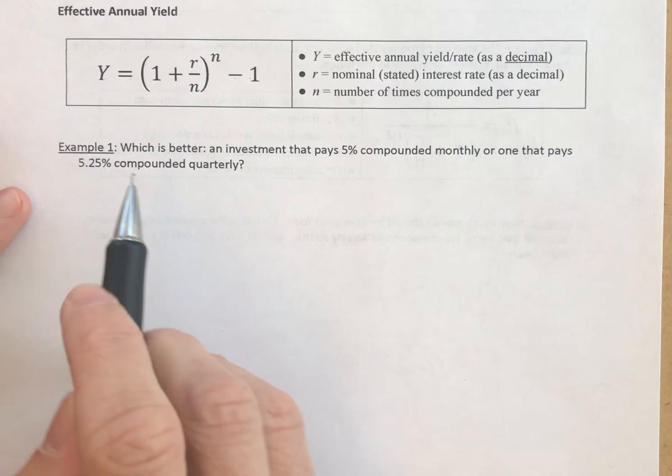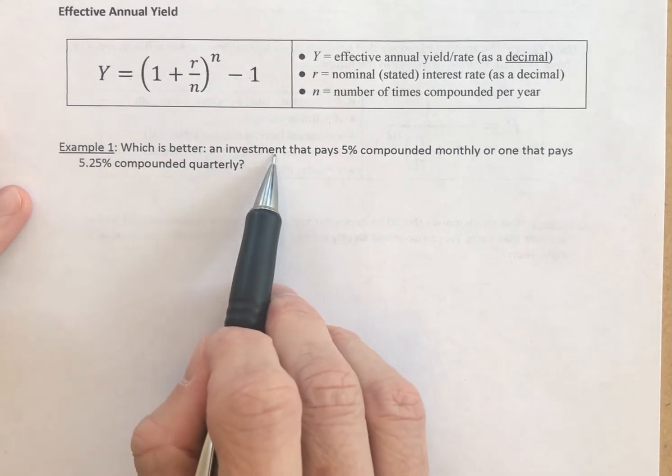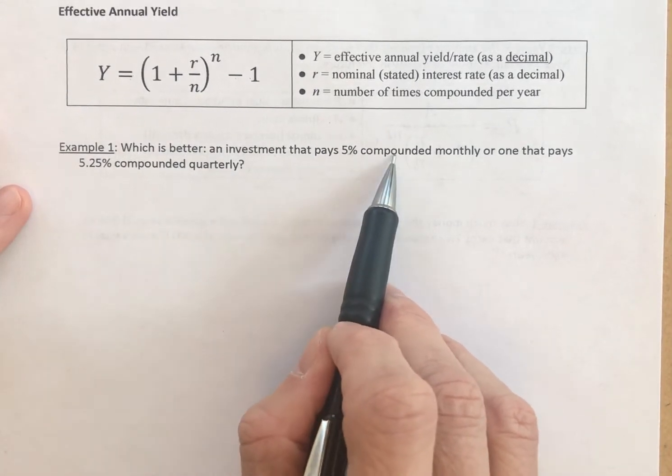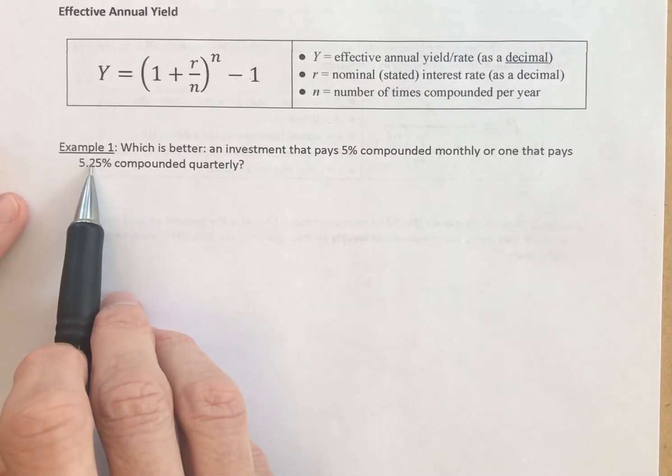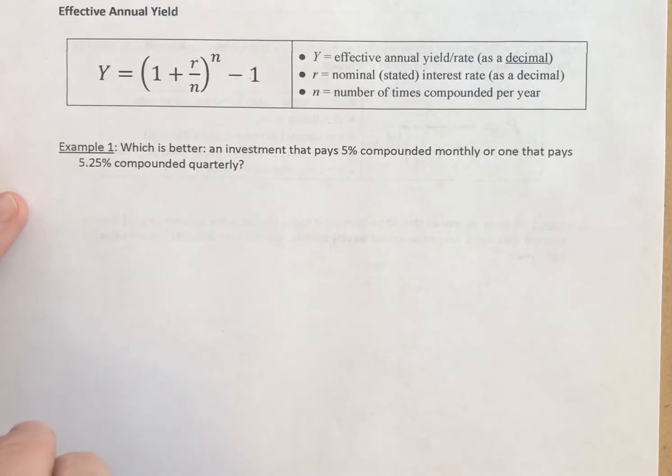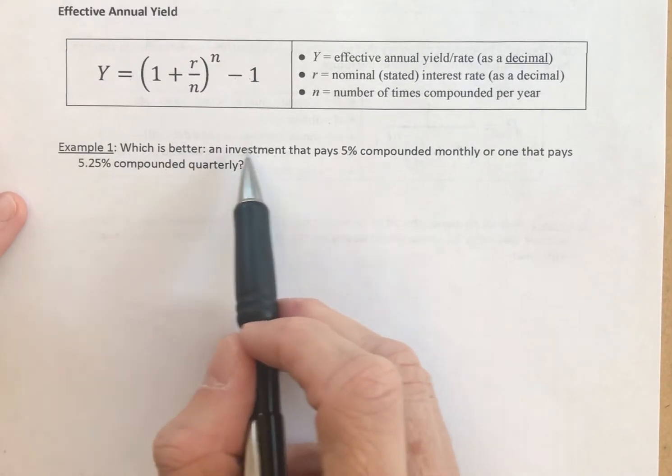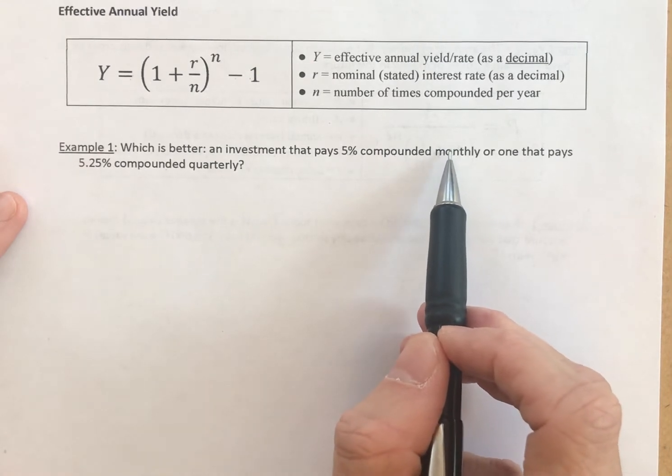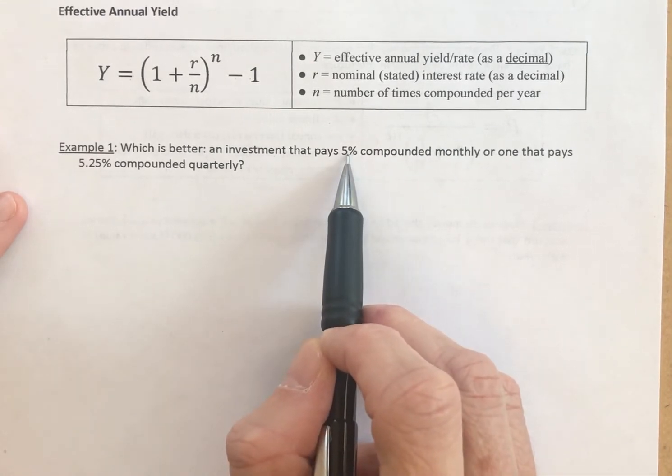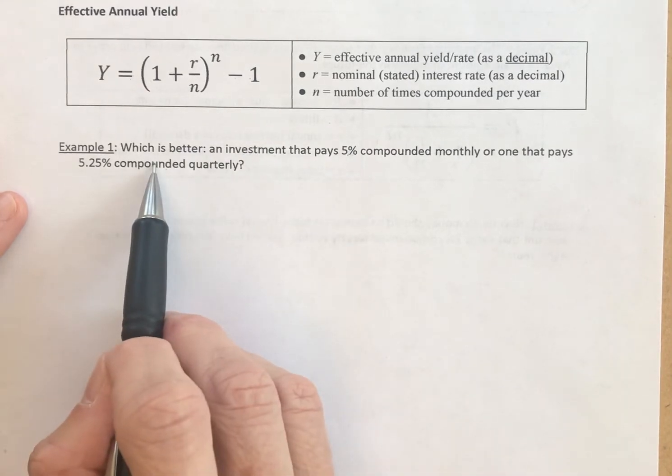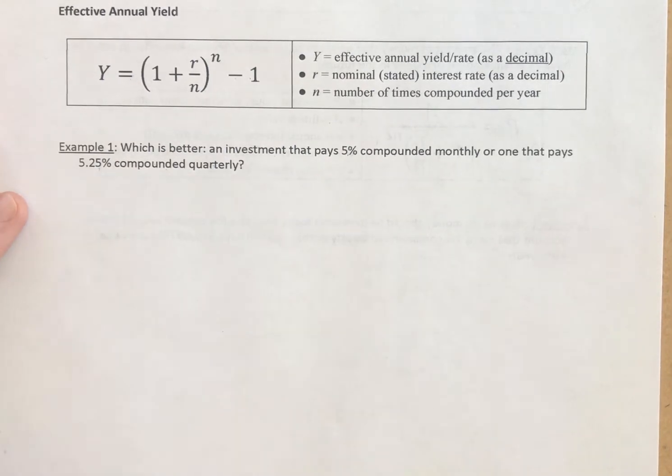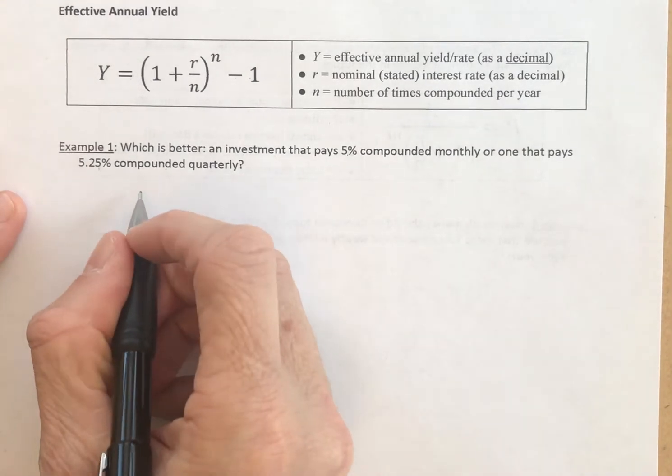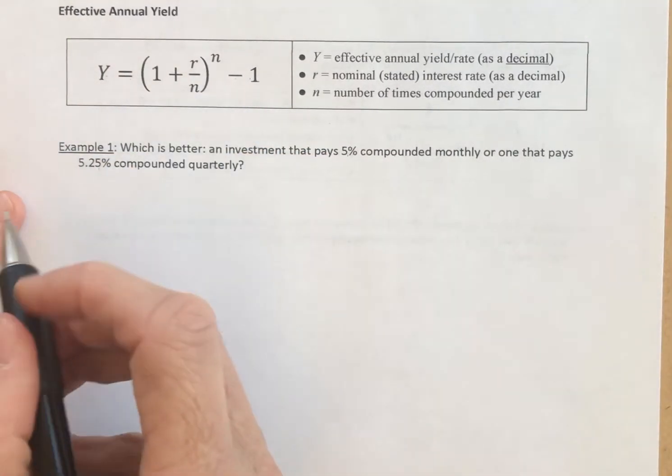It's fairly straightforward. Which is better: an investment that pays 5% compounded monthly, or one that pays 5.25% compounded quarterly? So the first investment here is compounding more often, but it's a lower rate. The second investment is compounding less often, only four times per year, but it's a slightly higher rate. So which one's better? If we calculate their yield, we can compare them.